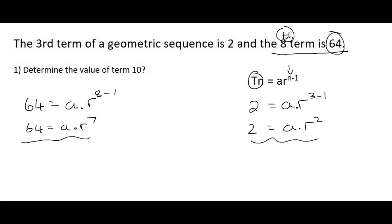So the way a simultaneous works is you just need to get one of the letters by themselves. So for example, I'm going to take this equation over here and I'm going to get A alone. So that's going to give me 2 over R squared. And there are other ways to do this. Your teacher might use a different technique, but the answers at the end will be the same.